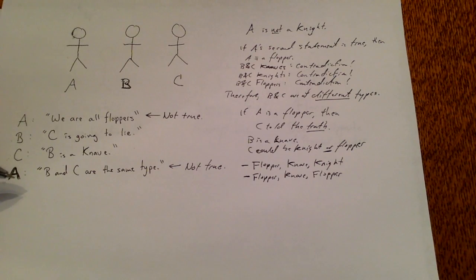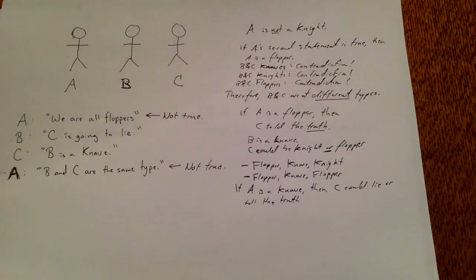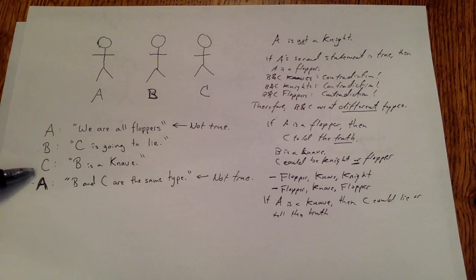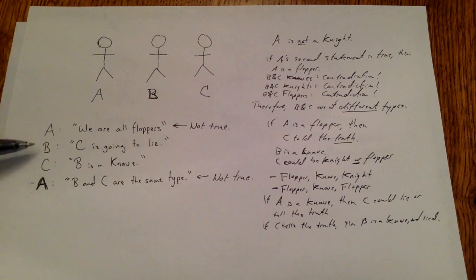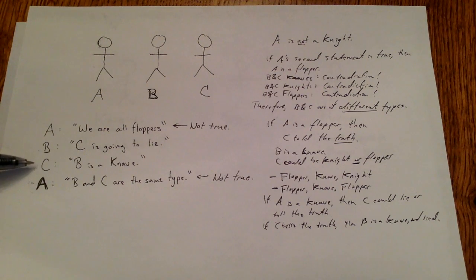Now we need to check if A is a knave. If A is a knave, then we don't know anything about C's truth value from that statement. So if A is a knave, C could lie or tell the truth. If C tells the truth, then B is a knave and lied — which is consistent because B's claim that C is going to lie is itself a lie, and C told the truth. Since B lied, C could be a flopper, so C could either be a flopper or a knight.